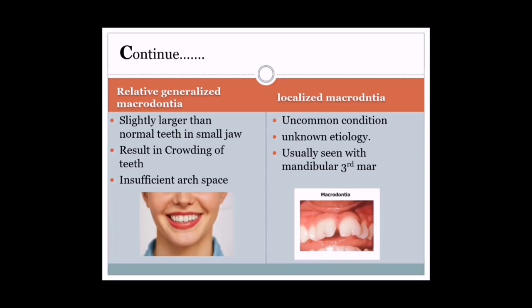Number three: localized macrodontia is a common condition of unknown etiology, usually seen with the mandibular third molar. A picture is shown demonstrating localized macrodontia of the central incisors.